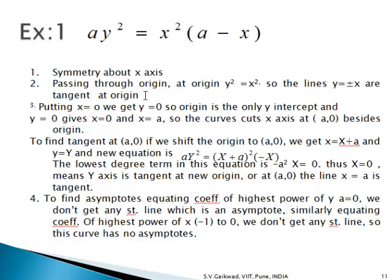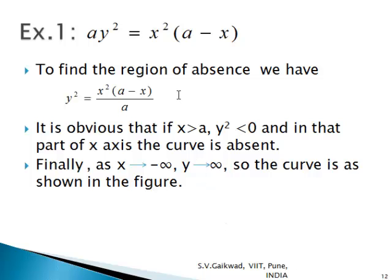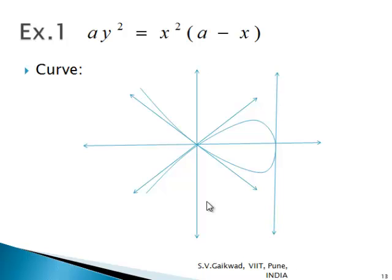For asymptotes: the coefficient of y² is a (a constant), so equating to zero gives no asymptote. The coefficient of the highest power x³ is −1, also giving no asymptote. So this curve has no asymptotes. For region of absence: y² = x²(a − x)/a. Since x² and a are always positive, the sign of y² depends on (a − x), which is negative for x > a. So the curve is absent for x > a. As x → −∞, y → ∞. The curve is as shown, with y = ±x as tangents at the origin and x = a as tangent at (a, 0).